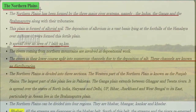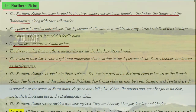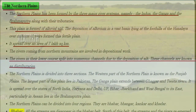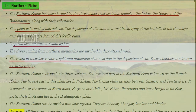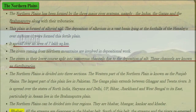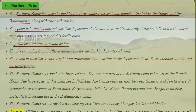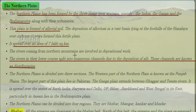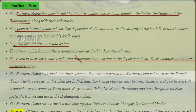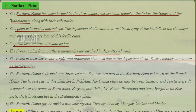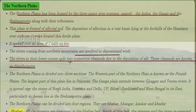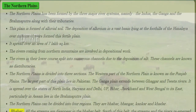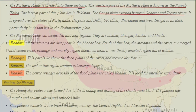The Northern Plains have been formed by three major river systems: the Indus, Ganga and Brahmaputra along with their tributaries. This plain is formed of alluvial soil. The deposition of alluvium in a vast basin at the foothills of the Himalayas over millions of years formed this fertile plain, spreading over an area of 7 lakh square kilometers. Rivers coming from the northern mountains are involved in depositional work, and in their lower course split into numerous channels due to silt deposition; these channels are known as distributaries.